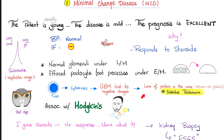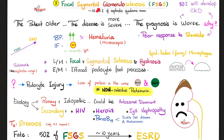Minimal change disease was discussed in the previous video. Remember: the patient is young, the disease is mild, and the prognosis is excellent because it responds to steroids. But in focal segmental glomerulosclerosis, the patient is older, the disease is more severe, and the prognosis is worse — because of poor response to steroids and because about 50% of patients will end up with end-stage renal disease within about a 10-year period on average. Blood pressure is high, and there can be some microscopic hematuria, getting into nephritic territory. So you can have both nephrotic and nephritic symptoms in the same patient.